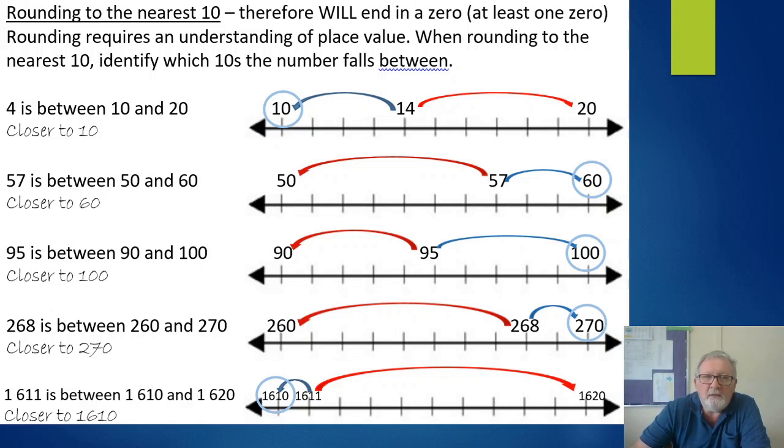When we're rounding to the nearest 10, we need to be able to identify the tens either side of that number or the tens that that number falls between. I've got a little bit of a mistake here - that should actually say 14. 14 is between 10 and 20. There it is on the number line, so there's 10, there's 20, and that's where 14 falls. It's easy to see that 14 is closer to 10 and so it's rounded down to 10.